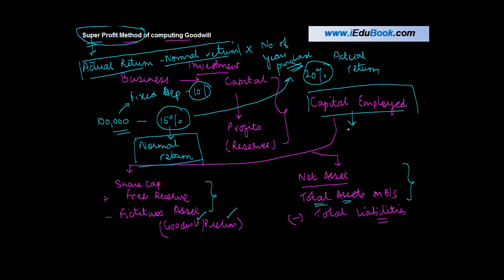Your capital employed can be calculated by various means. It can even be taken as opening capital employed plus closing capital employed, the sum of these two divided by two to get the average capital employed if that is not given to you. Once you have this, you compute the normal rate of return, which is let's say 15% in this case.